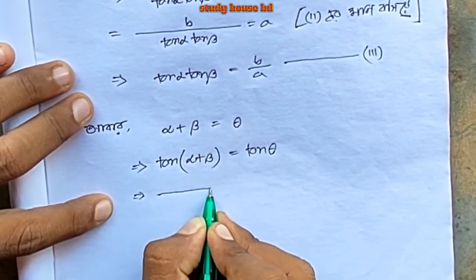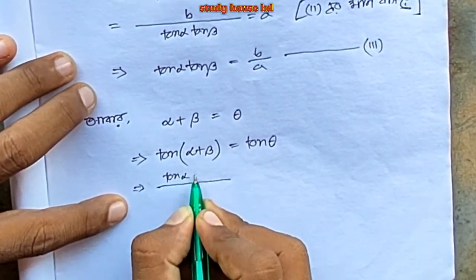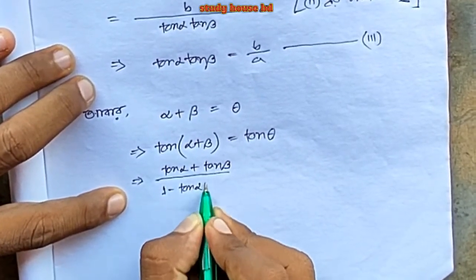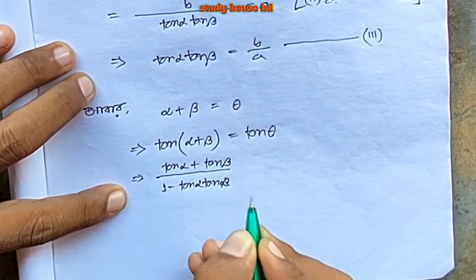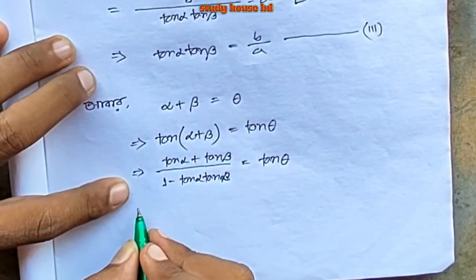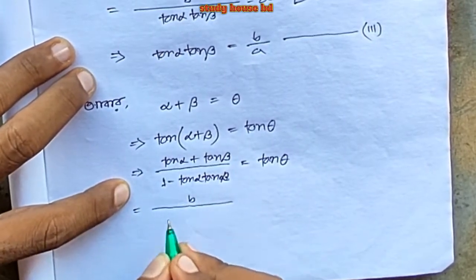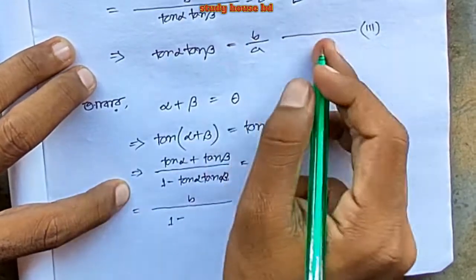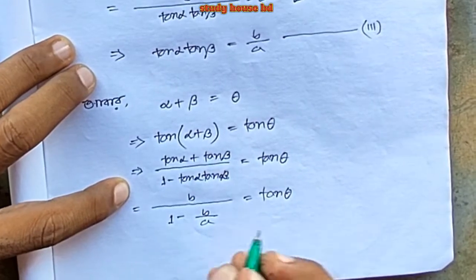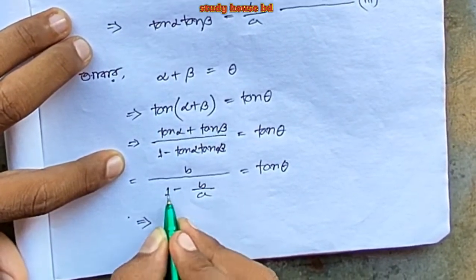So tan alpha plus tan beta, 1 minus tan alpha tan beta equals tan a. So tan alpha plus tan beta over 1 minus tan alpha tan beta equals tan theta.